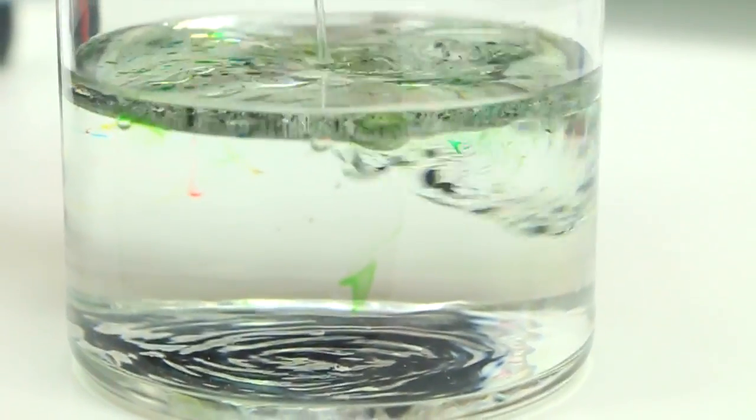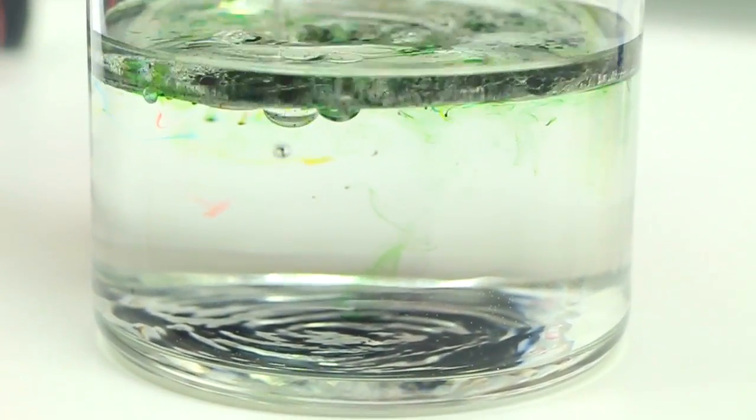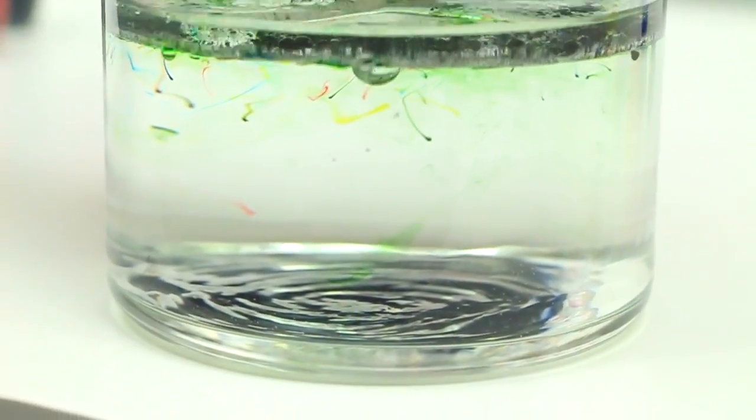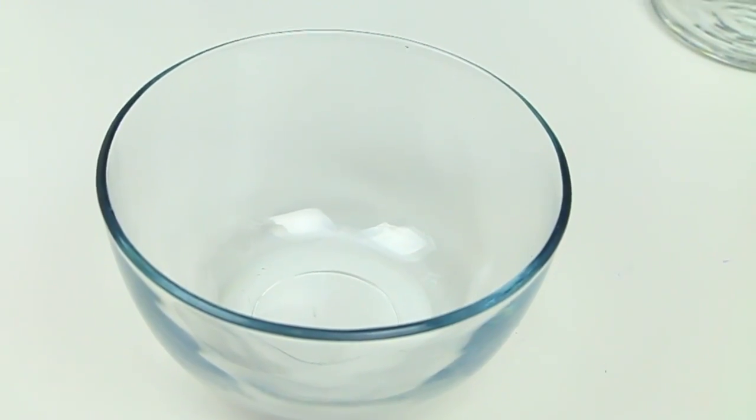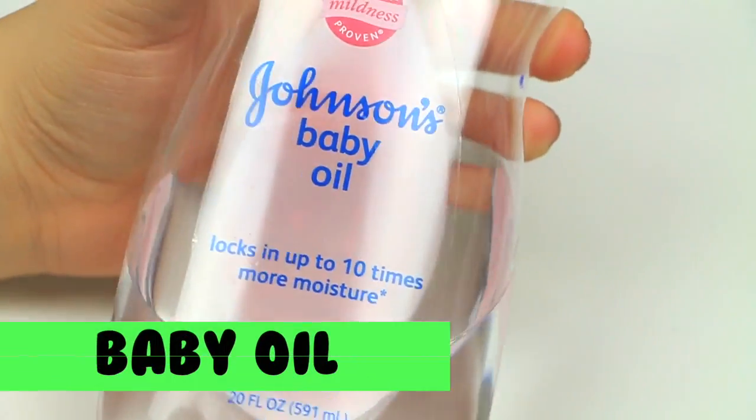So the very first science project we're going to be trying is the fireworks underwater. This is actually super easy to make and super cool to look at as well. We're going to need about half a cup of water or a third. It doesn't really matter. Just fill your container with some water.